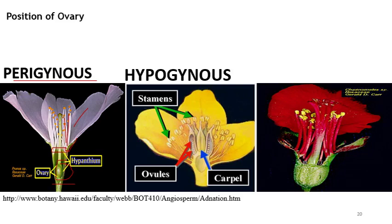In the hypogynous condition, the thalamus is convex or conical. The gynoecium develops on the top of the thalamus, while stamens, petals, and sepals are borne on the side of the thalamus below the gynoecium. So the gynoecium is superior but all the other parts are inferior.